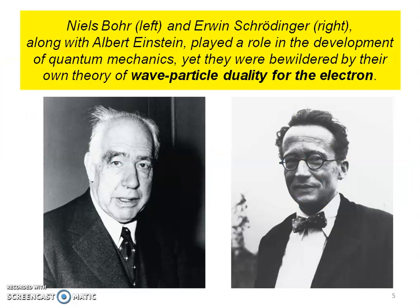These two scientists — Bohr and Schrödinger, along with Einstein — actually developed quantum mechanics. That's where those quantum numbers came from. They were actually bewildered by their own theory of what's called the wave-particle duality for the electron. We're going to talk about how this electron and light have both wave properties and particle properties.